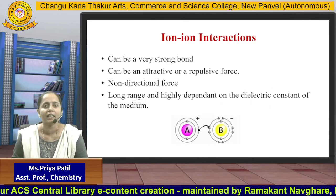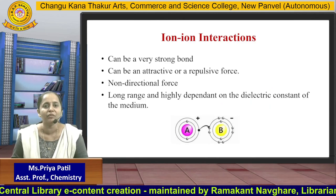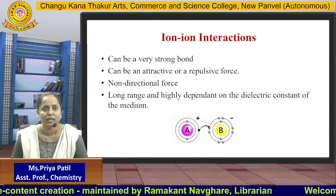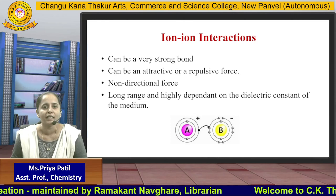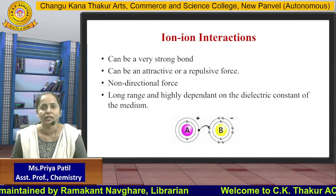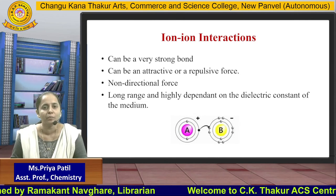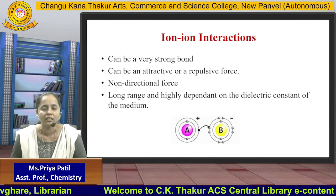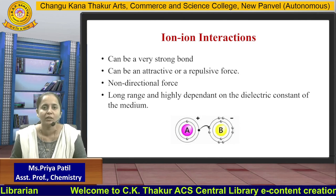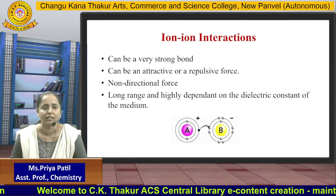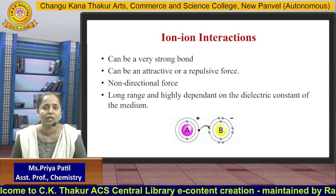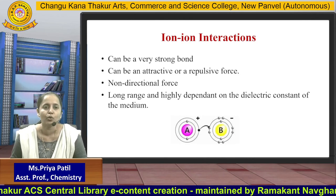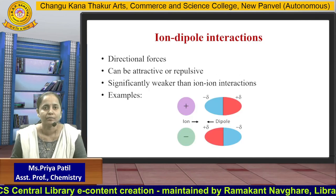The second interaction is Ion-Ion interaction. It can be a very strong bond, and it can be an attractive or repulsive force. It is a non-directional, long-range force and is highly dependent on the dielectric constant of the medium. In this interaction, two oppositely charged ions bind with each other by a force of attraction. In the diagram, A having a positive charge and B having a negative charge bind together, demonstrating Ion-Ion interaction. Now the third one...